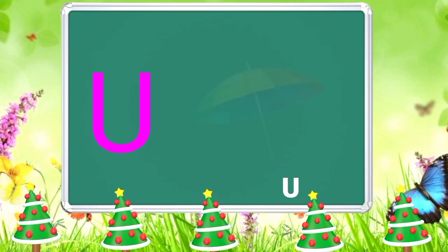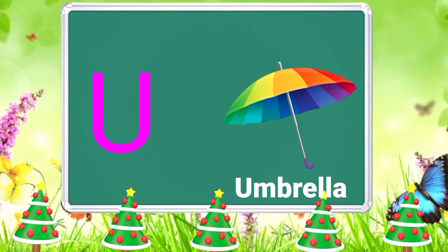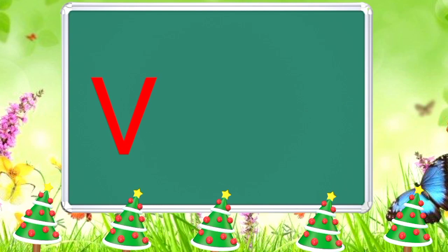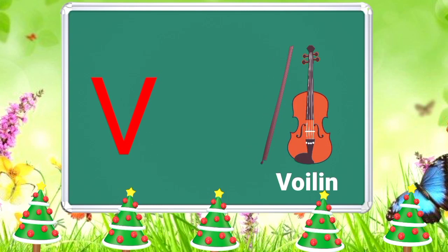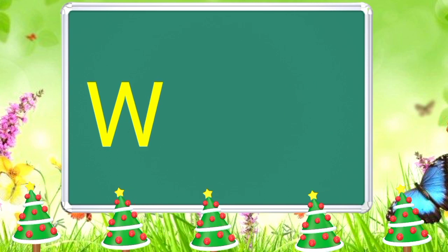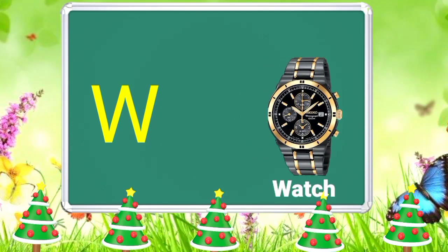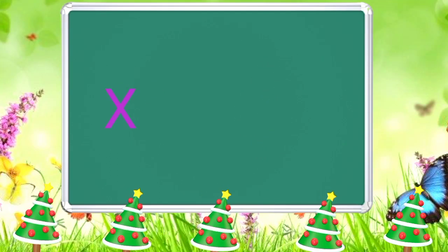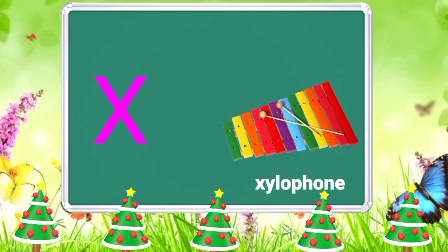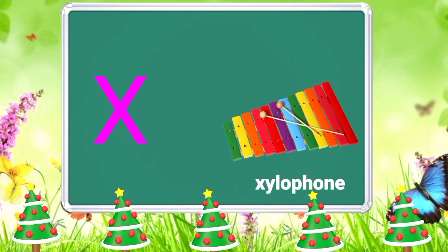U is for Umbrella, U-U-Umbrella. V is for Violin, V-V-Violin. W is for Watch, W-W-Watch. X is for Xylophone, X-X-Xylophone.